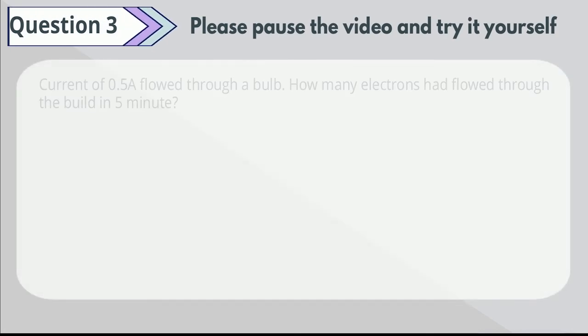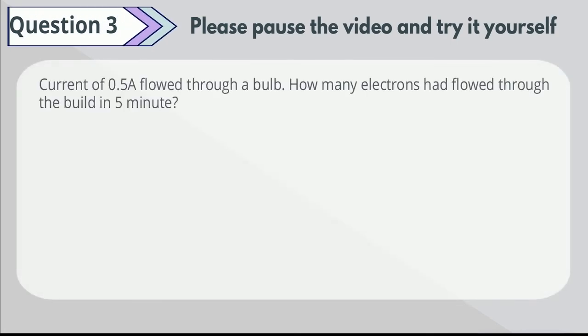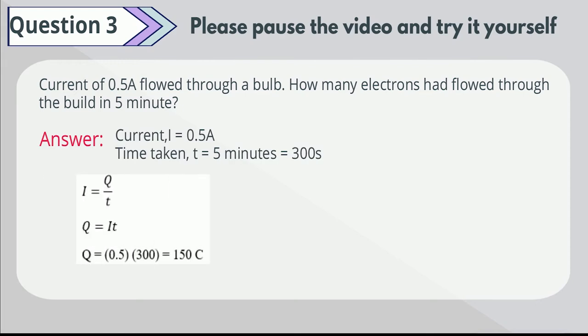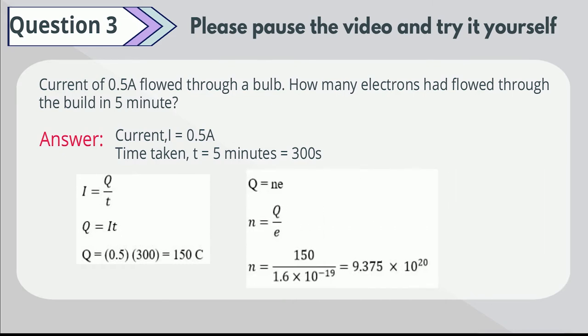Question 3. A current of 0.5 amps flows through a bulb. How many electrons have flown through the bulb in 5 minutes? Please pause the video and try it yourself. From the information given, by using I is equal to Q over t, we can calculate that the charge is equal to 150 coulombs. With that, the number of electrons is equal to 9.375 times 10 to the power of 20 electrons.